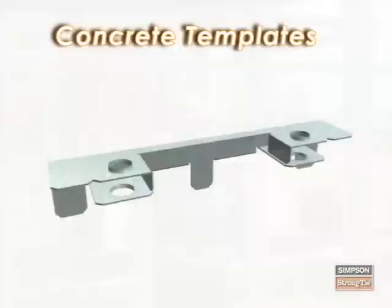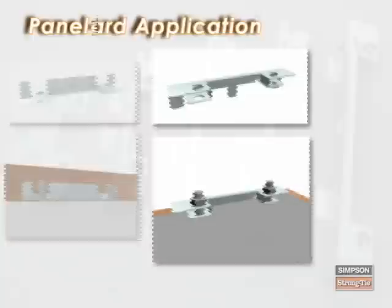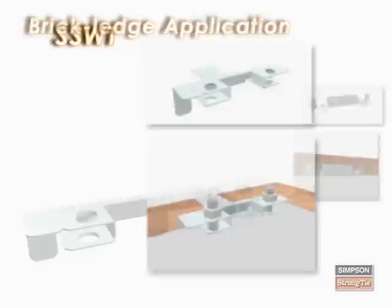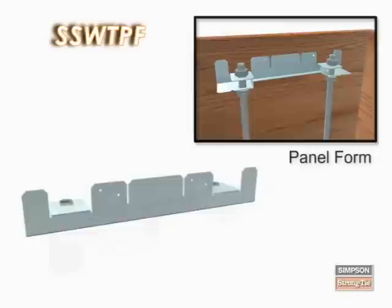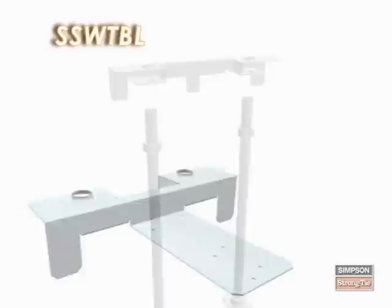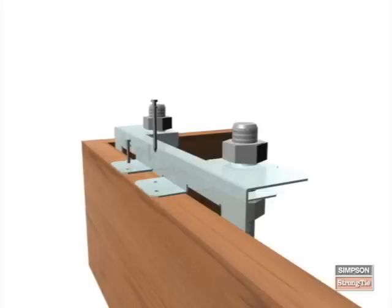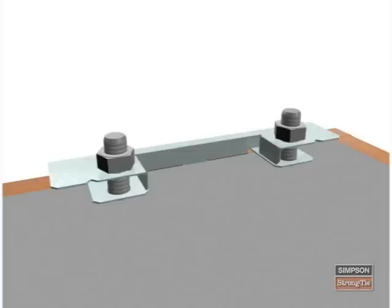Steel strong wall concrete templates are reusable templates that attach to the form boards. Their purpose is to properly space, hold, and elevate the required anchor bolts. There are five different template sizes and three basic ways to use them: the SSWT standard reversible template for both interior and exterior applications, the SSWTPF for panel form applications, and the SSWTBL for brick ledge applications. Decide which method you will use before installing the anchor bolts. Start the installation by securing the anchor bolts to the template with the compression nuts and the installation nut, then place the whole assembly on the wood form. Check that it is in the right location. Pour the concrete to the top of the compression nut. After the concrete is cured, remove the nails, the top installation nut, and the reusable template.